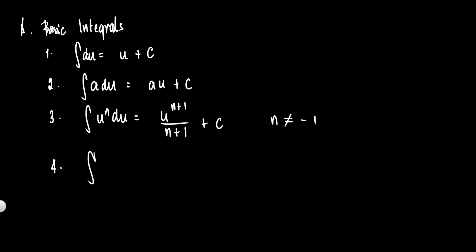Number four: we have the integral of du over u — like the derivative of the function over the function — and that is equal to ln of u plus c.